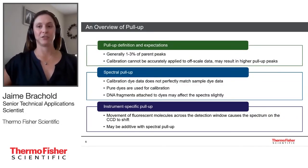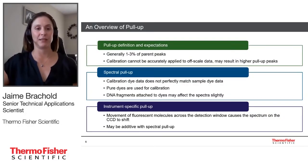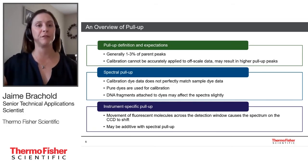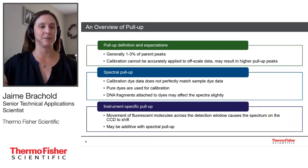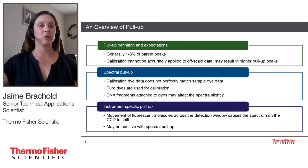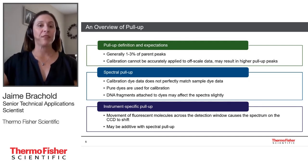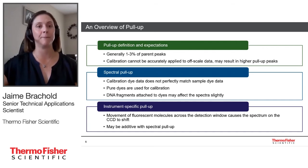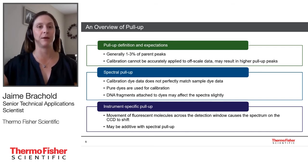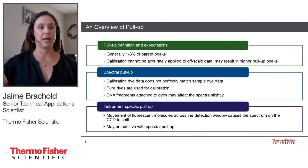Let's get into the pull-up reduction features included with these data collection versions. To make sure we're all on the same page, we'll do a quick overview of pull-up. Generally, we expect pull-up peaks to be within the range of 1% to 3% of the parent peaks they fall underneath. With off-scale data, these values could be slightly higher — you may see pull-up above 3% more often when dealing with an off-scale sample.